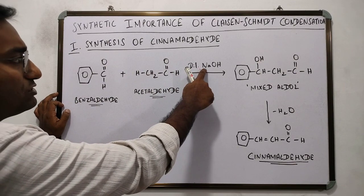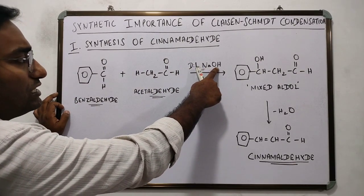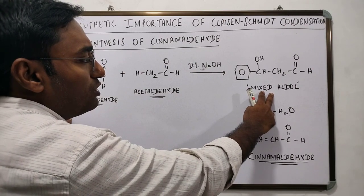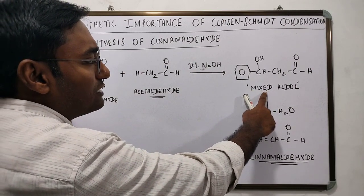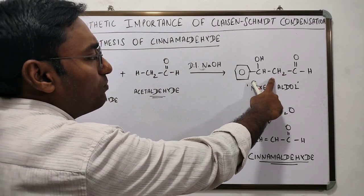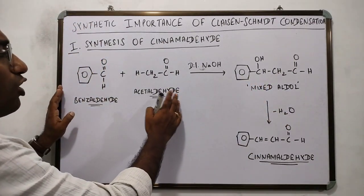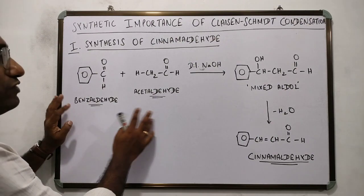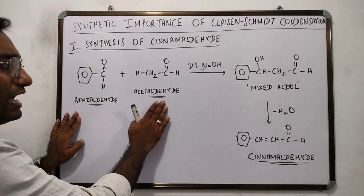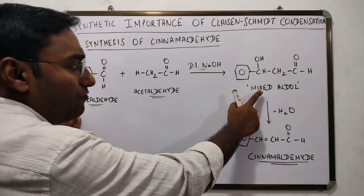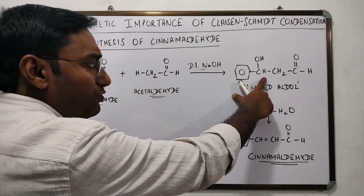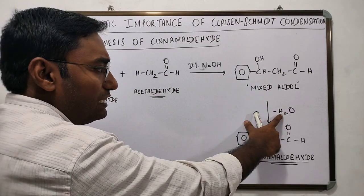Treat them both in the presence of dilute NaOH, and what you get is a mixed aldol. It is referred to as a mixed aldol because the aldol formed is an adduct of substrates belonging to two families — the aromatic family and the aliphatic family.